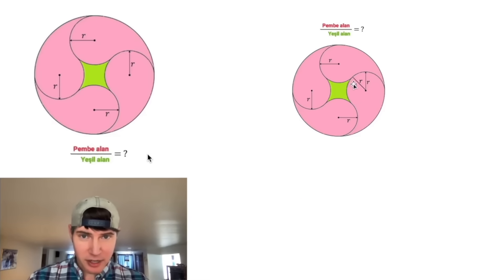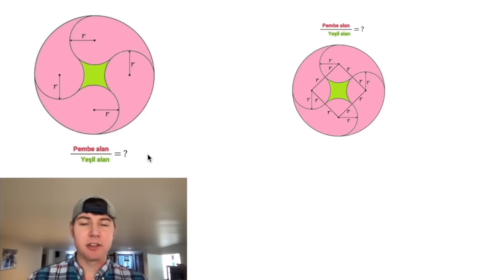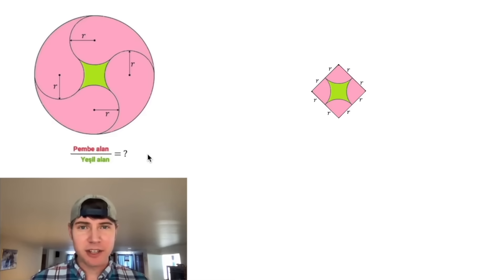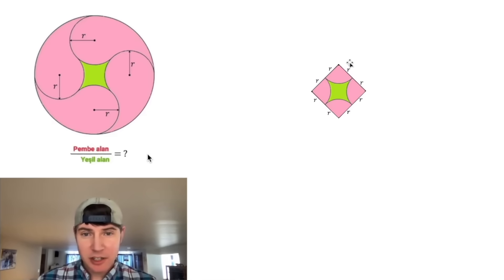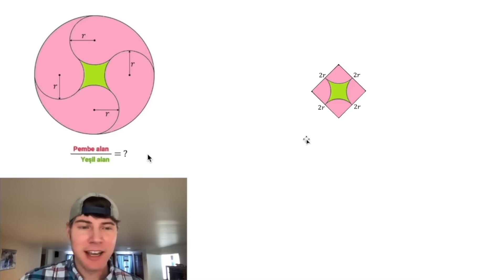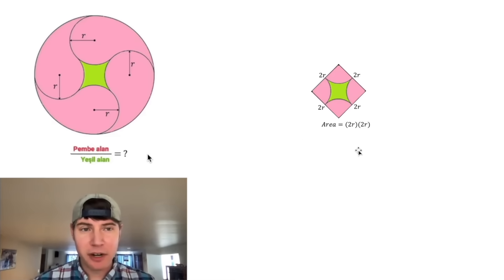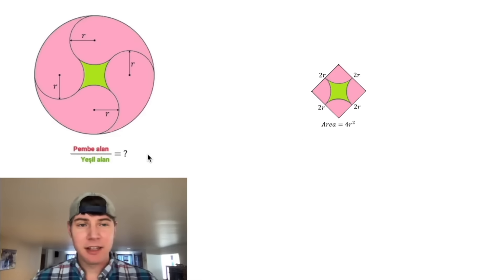So let's draw the radius right here. In fact, let's draw all these radii so that we have a square in the middle right here, and let's focus on that square. Each of these sides are two radii, so we can call it 2R. The area of the square is going to be 2R times 2R, which is the same thing as 4R squared.